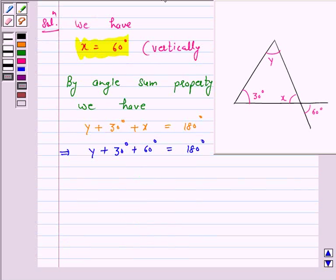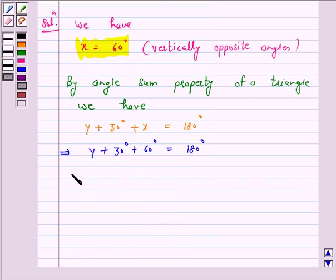This implies y plus 90 degrees is equal to 180 degrees. This implies y is equal to 180 degrees minus 90 degrees, that is y is equal to 90 degrees.